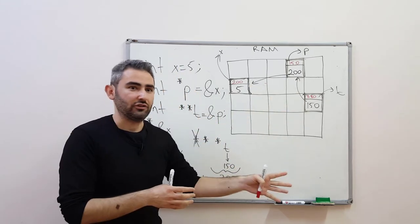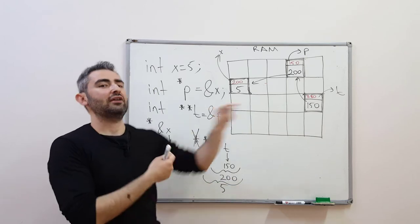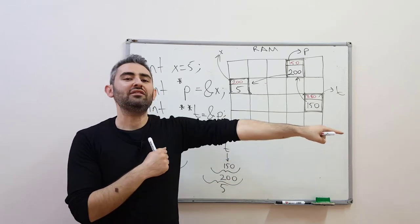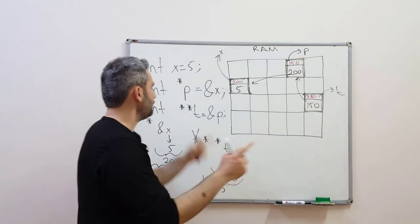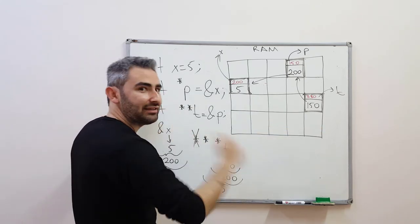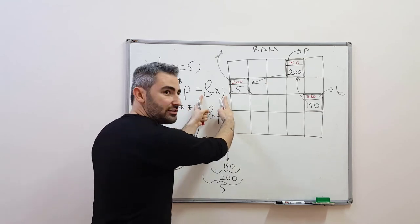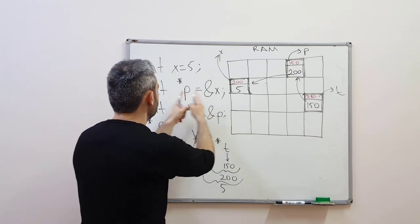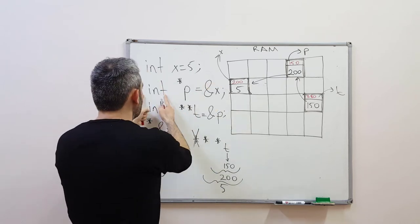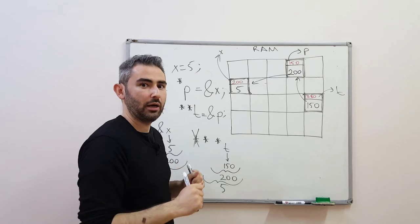This is basically what a pointer is — they are variables that point to another place, that is why it's called a pointer. It's pointing to another address. Be careful: the type of the pointer should be compatible with the type of the target address. If x is integer and the pointer is integer, they are compatible. You can't define a char pointer to an integer address.